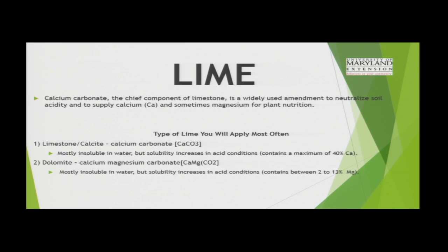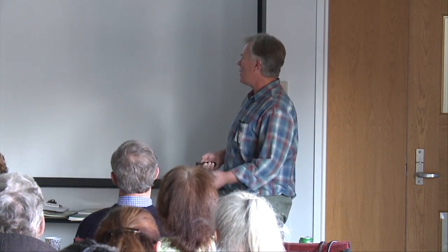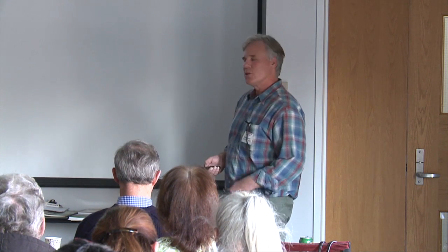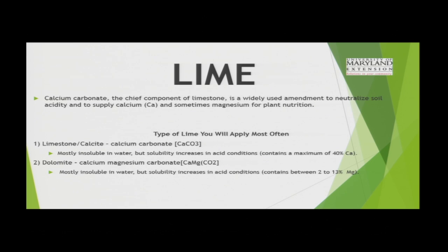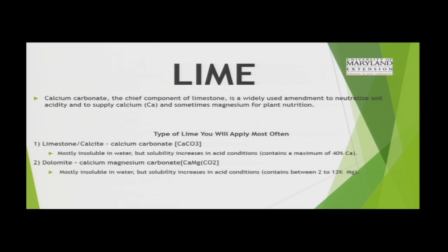Lime — that's the great product we use to change the acidity of the soil and raise the pH. Calcium carbonate, which is the chief component of limestone, is what we use to raise the pH around here. If you're going to lower the pH, you would use sulfur. Lime is the most widely used amendment to adjust soil acidity. It can also supply significant amounts of calcium, and depending on the source, it can also contribute a significant amount of magnesium. So it's a winner three times around: we're raising our pH and supplying significant amounts of calcium and magnesium.